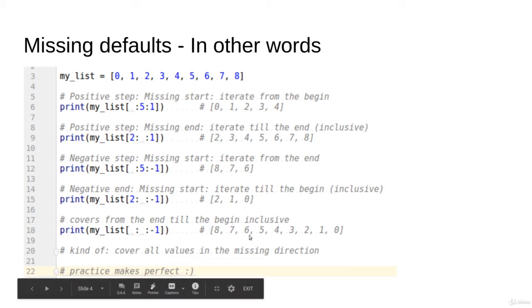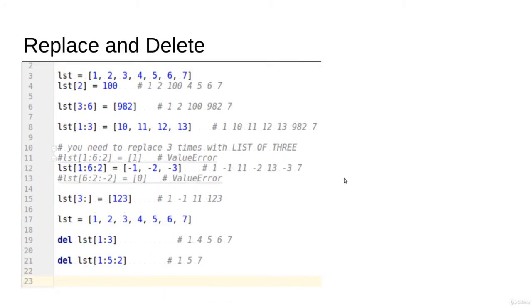Like anything, you have to practice a lot to have these rules solid in your mind. The last thing to know is replacements and deleting. We can utilize slicing to replace or delete items from a list. In the normal case, we access a single index like [2] and replace it with a value like 100. But we can also provide a slice like [3:6] and replace it with values [9, 8, 2]. Three is here, six is exclusive, so positions three, four, five get replaced with nine, eight, two.